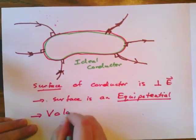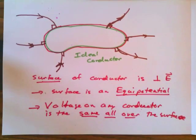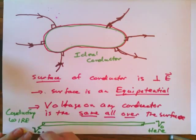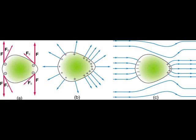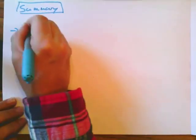The surface of the conductor forms a surface perpendicular to the field lines everywhere. As we know, any surface perpendicular to electric field lines is called an equipotential, meaning the voltage on any conducting surface is the same everywhere over the entire surface. For example, if you have a conducting wire and apply a voltage V₀ at one end, voltage V₀ automatically appears at the other end — wires transport voltage. Choice B here shows an ideal conductor with positive surface charge and field lines going outward; choice C shows the same conductor embedded in a uniform field where field lines enter and exit perpendicularly.